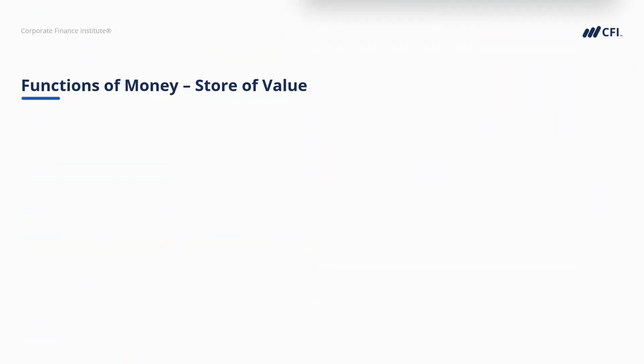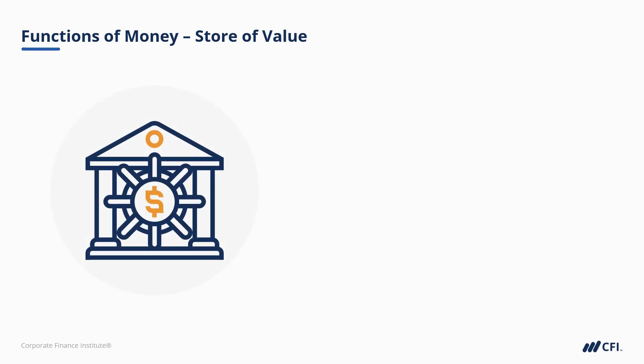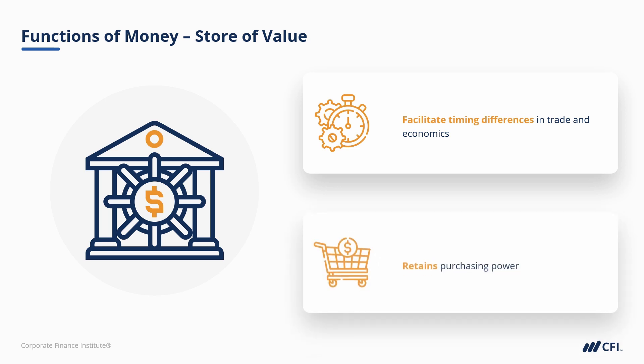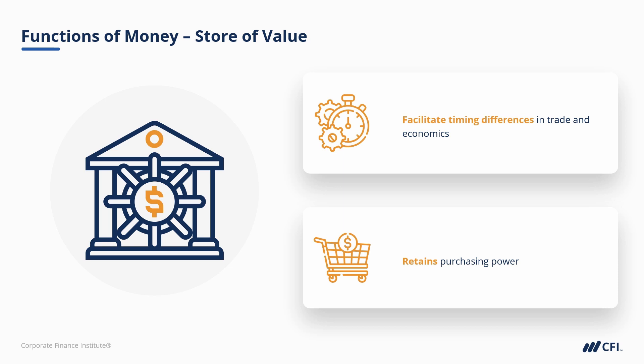The last and most important function of money is as a store of value. This serves two very important purposes. Number one is to facilitate timing differences in trade and economics — with money, Mark can sell his eggs today but choose to either spend it now or save the proceeds and spend it later. Number two is that money retains that purchasing power over time to a high degree, which means trade can become decentralized, and Mark can take his money from one marketplace to another and spend it somewhere else.